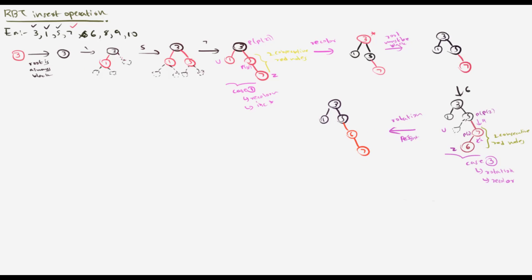After the right rotation the tree is still not fixed — this is the right-left case so we must perform a left rotation as well. After the left rotation at 5, the new subtree root becomes 6, with 7 to the right and 5 moving down to the left. Rotation is complete, and now we do the recoloring.